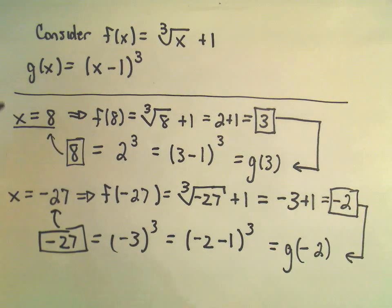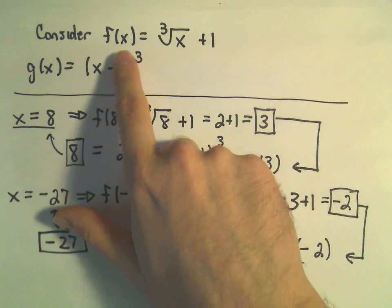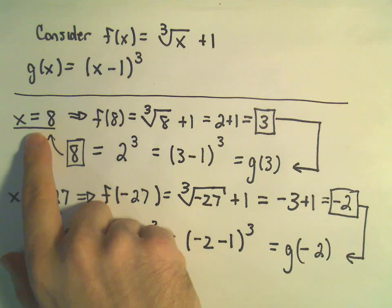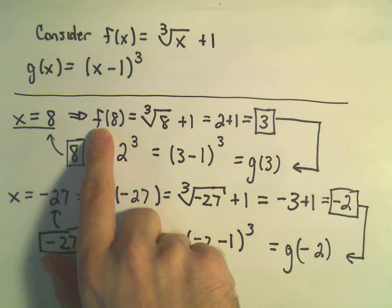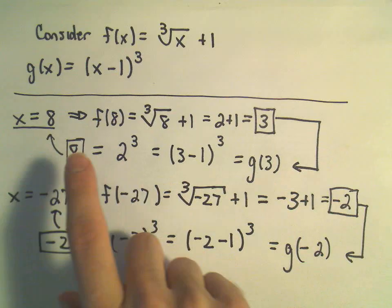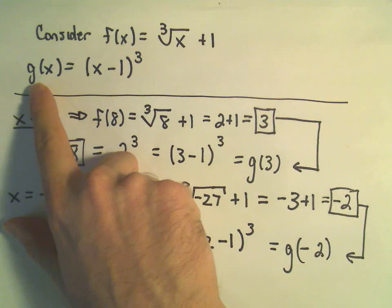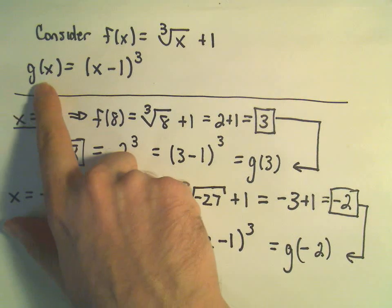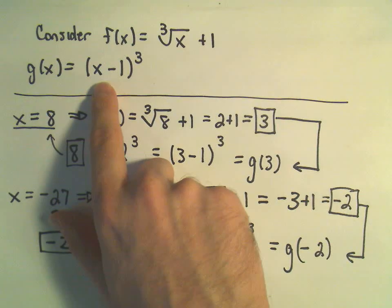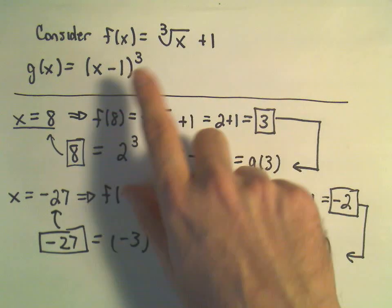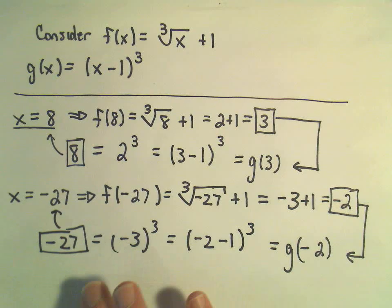I claim you can check this for as long as you want until you get bored. Plug in as many different values of x, plug it into f, you'll get something new, plug it into g, and you'll see you always get back the original number. And it works in reverse too — you can start with any number, plug it into g, you'll get something new, then go backwards and plug it into f, and you'll get back the original starting value.